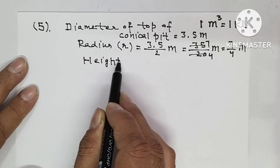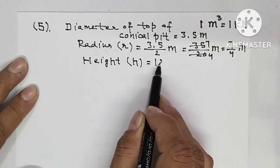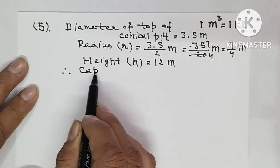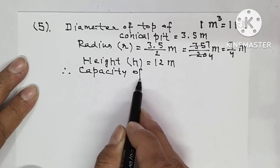One more is given: height or you can say depth H, which is equal to 12 meters. Therefore, capacity of conical pit...